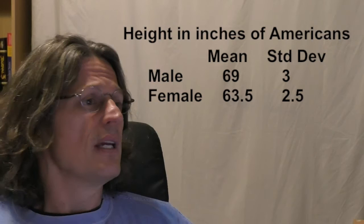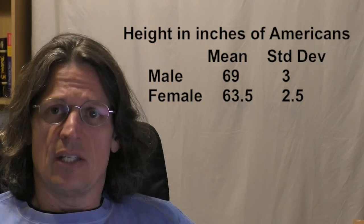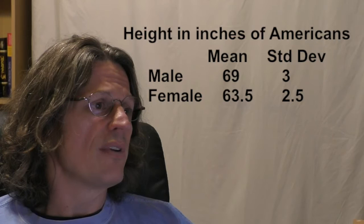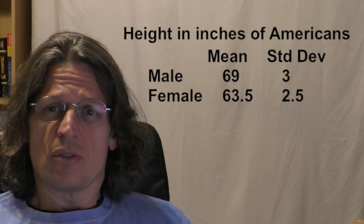So you might want to write this down. In the United States, according to the CDC, the average male height is 69 inches and the standard deviation of male height is 3 inches. For females, the average female height is 63.5 inches and the standard deviation is 2.5. For the normal distribution, you need to know both the mean and the standard deviation — those are the two parameters you have to specify, and they fully define a normal distribution. I'll show you how to work problems for male height and ask you to work the same problems for female height.